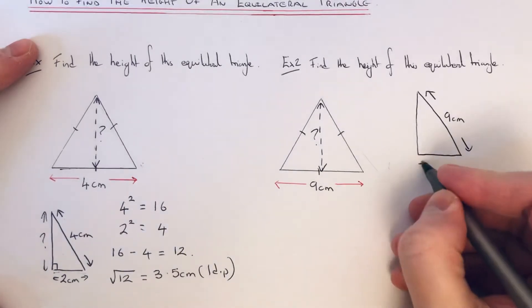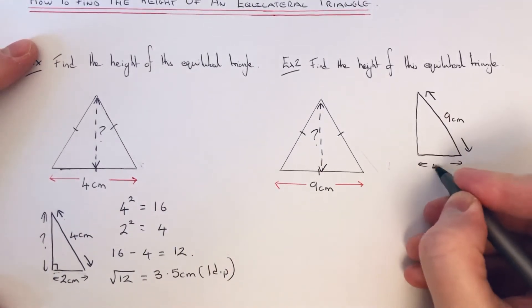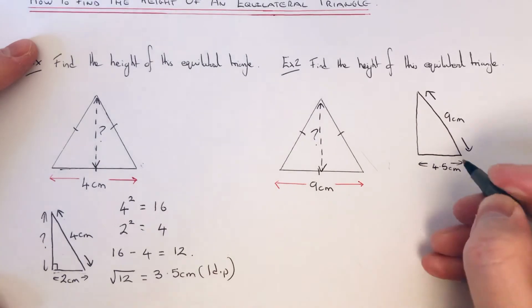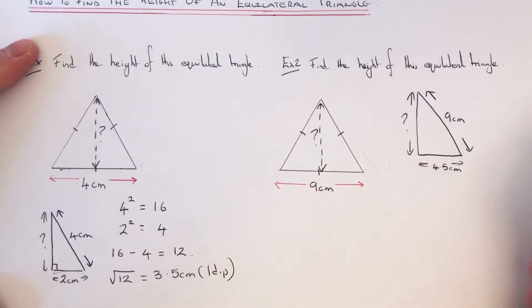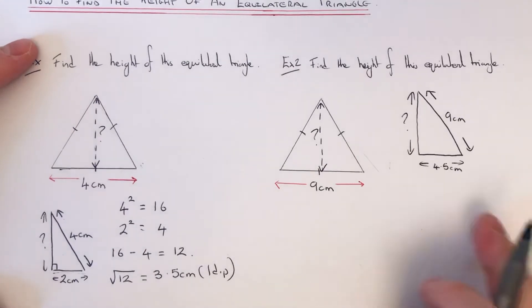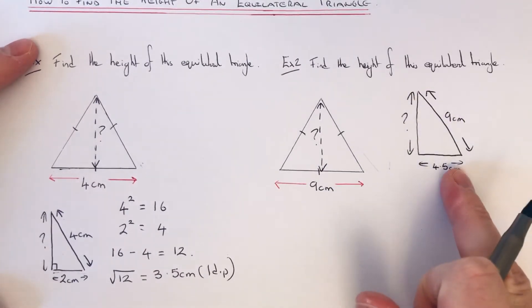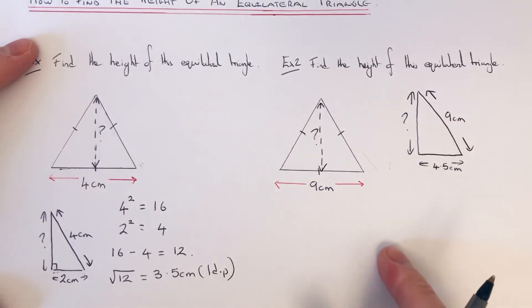And we just need to calculate the height here. So again it's Pythagoras because we've got two sides and we need to find the third side length in a right angle triangle.